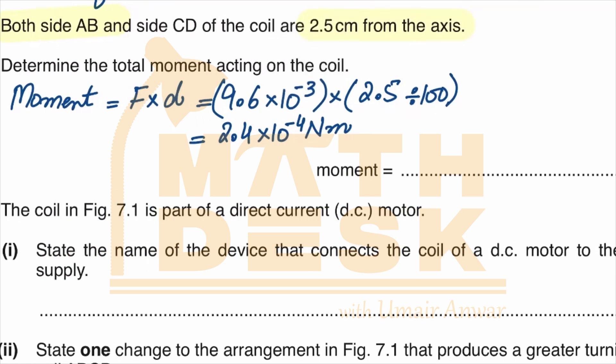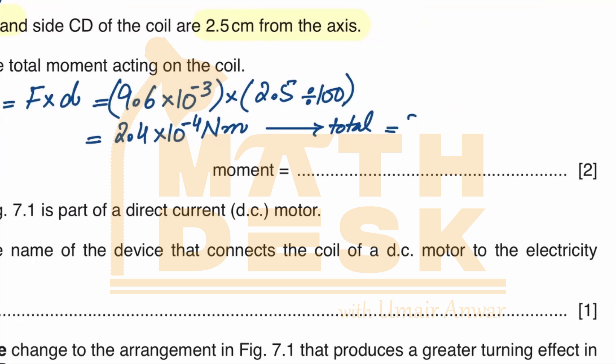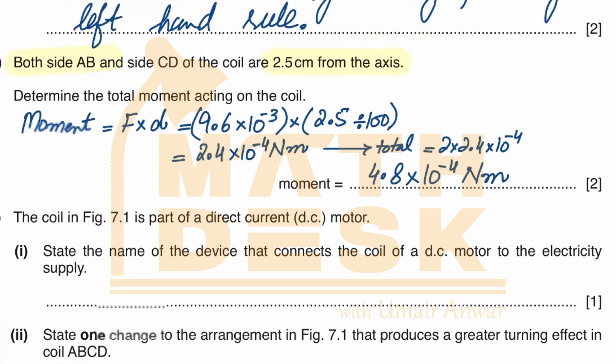For the total moment, we multiply by 2, so the total moment would be 2 times 2.4 × 10⁻⁴. The final answer is 4.8 × 10⁻⁴ newton meters for this part.